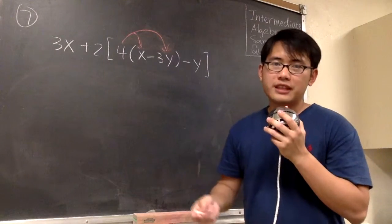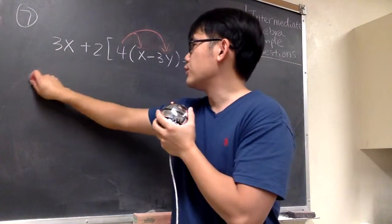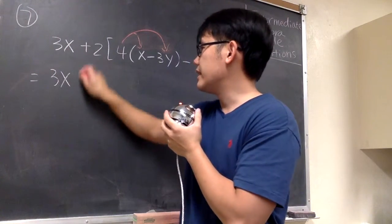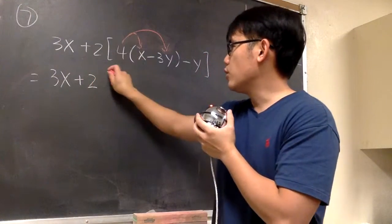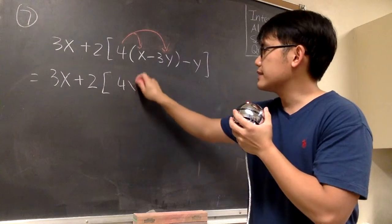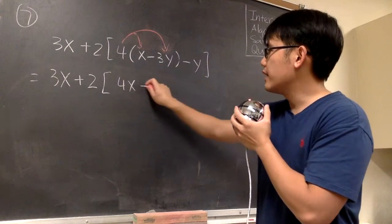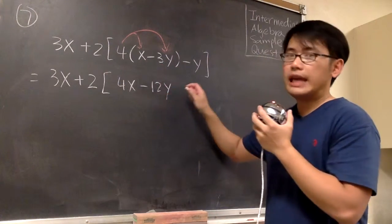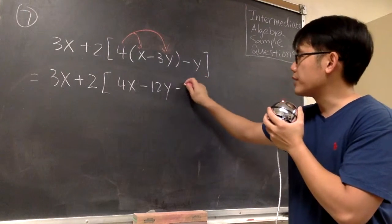Everything else will stay the same for now. So let's write down 3x and then plus 2. And we still open the bracket, and we work this out. 4 times x, that's 4x, and 4 times negative 3y, that's minus 12y. And we still have this minus y right here.